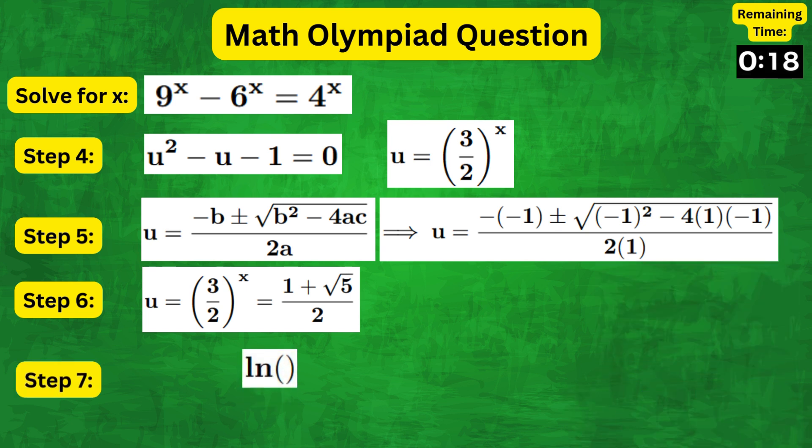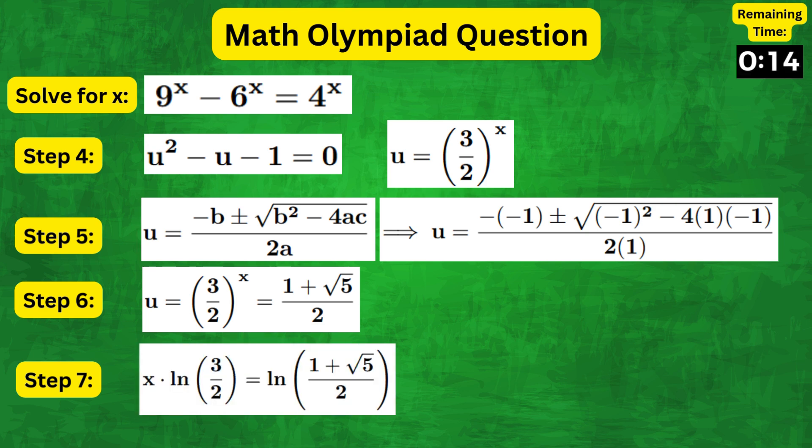Coming back to the question, we can take natural log on both sides to get x natural log of 3 over 2 equals natural log of 1 plus root 5 over 2.